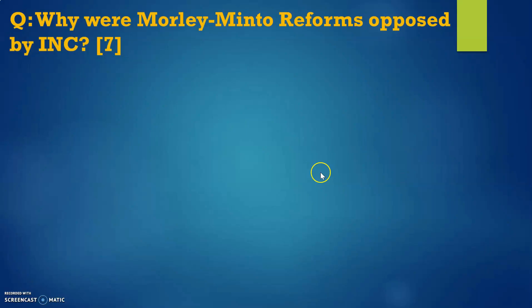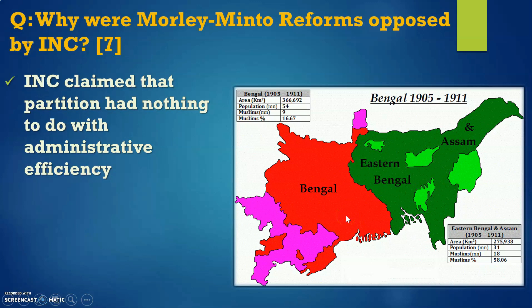Moving to the third and final paragraph: why the reforms were rejected by the INC. We need to address the Partition of Bengal. In 1905, Bengal was partitioned. The British gave the reason that they were unable to administer such a large province, so they divided it into East and West Bengal. However, the INC claimed that the partition had nothing to do with administrative efficiency and that the British were implementing their divide-and-rule policy — which the INC called a sinister reason.